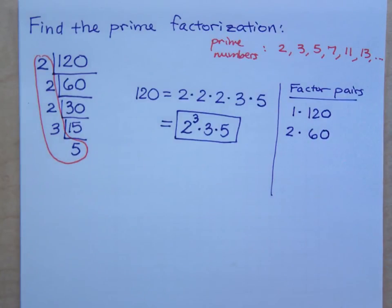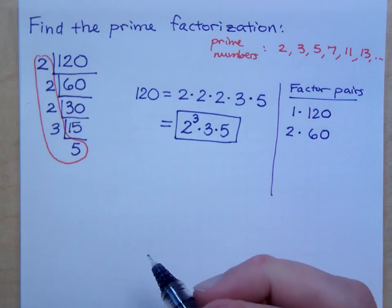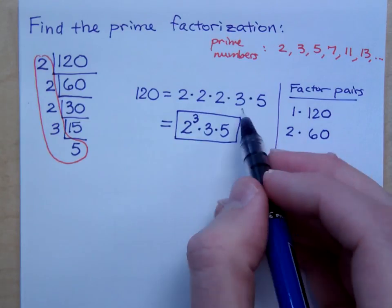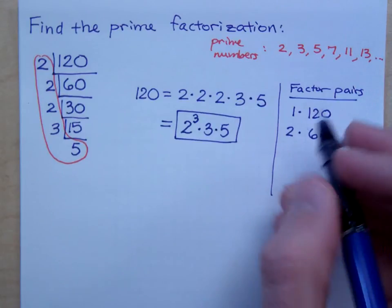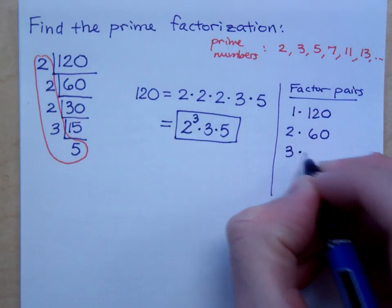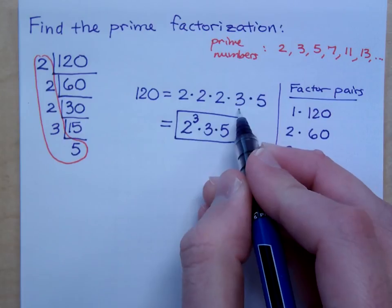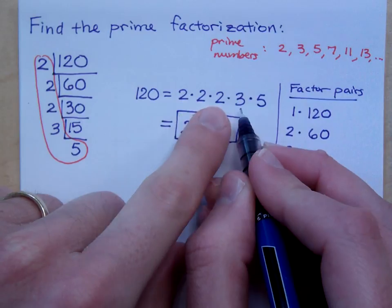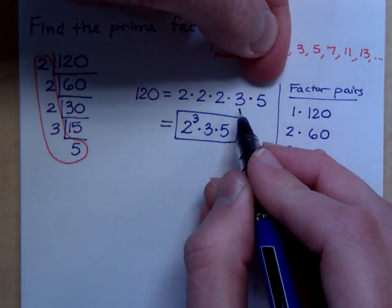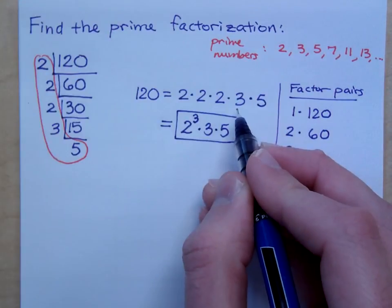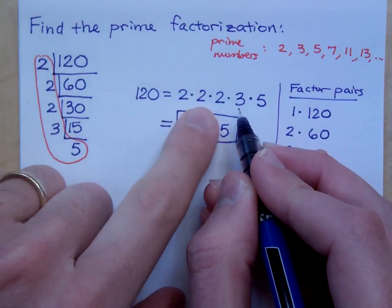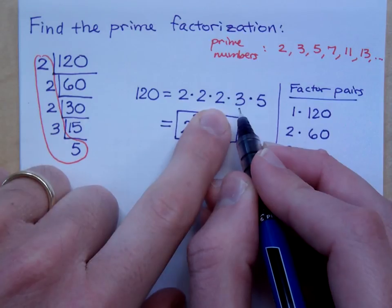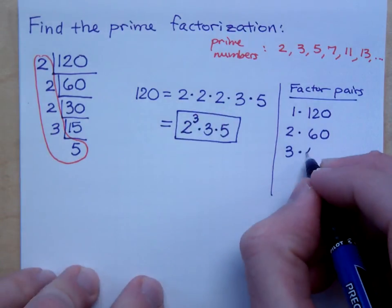For everything else, we can look at the prime factorization to see if these numbers go into it. Does 3 go into 120? Here is 3 as a factor, right? So, you know that 3 goes in here. Now, look at this. If 3 goes in here, look at the other factors that make up 120. You have 2 times 2 times 2 times 5. So, when you multiply the other factors together, what do you have? 2 times 2 times 2 is just 8. 8 times 5 is 40.